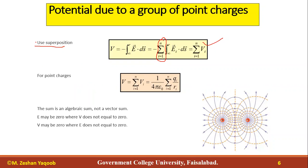For multiple point charges, we can directly add their contributions as an algebraic sum: V equals 1 over 4 pi epsilon-naught times the sum of q_i over r_i, where i runs from 1 to n. An important point is that E may be zero where V is not zero, and V may be zero where E is not zero — these are distinct conditions that don't necessarily coincide.